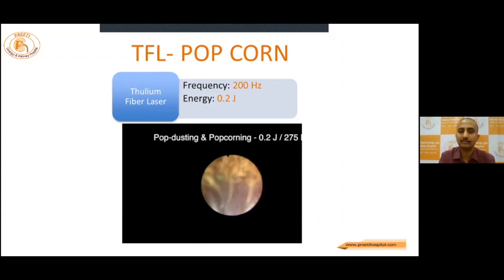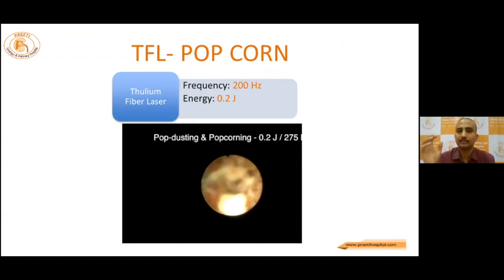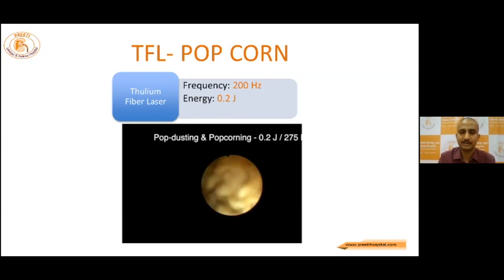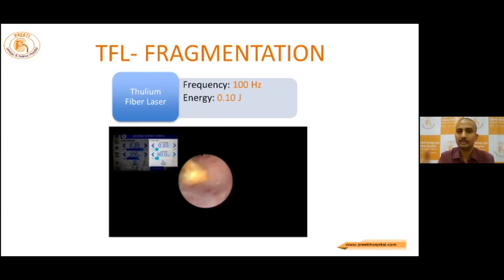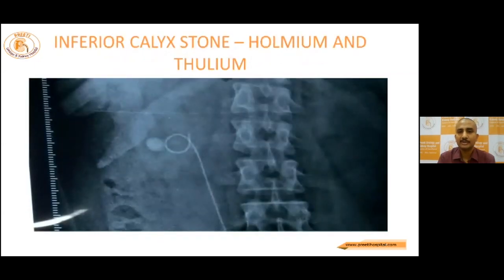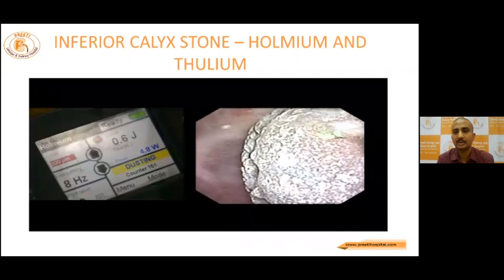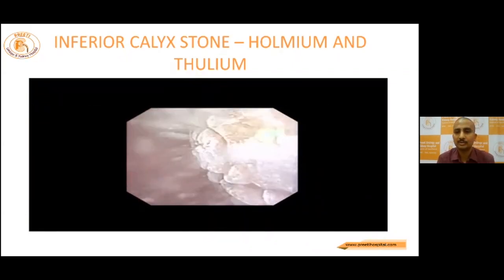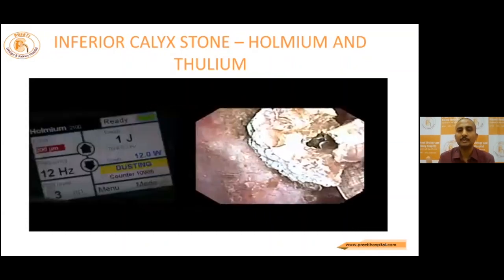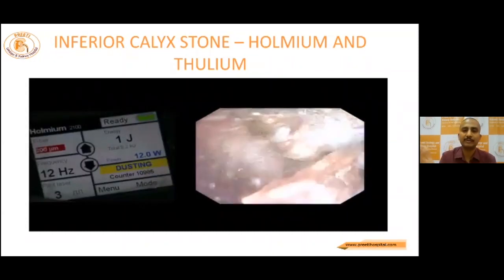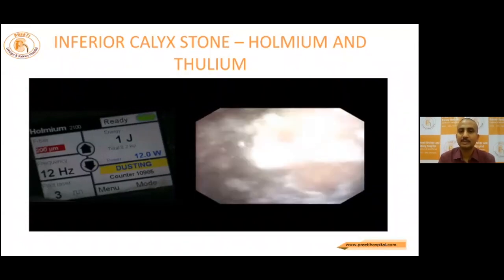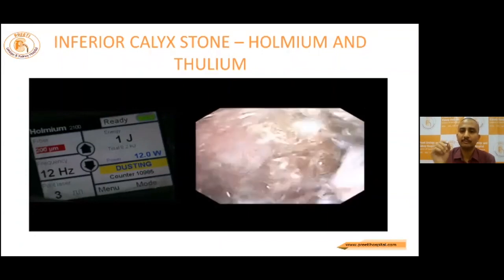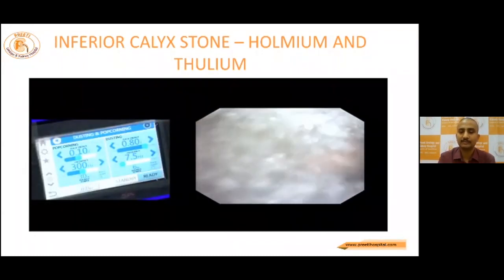For Thulium popcorn, it is one of the best popcorn methods available: whatever the stone burden in the calyx, it will reduce to powder quickly because of the very high frequency achievable. Energy is 0.2 joules and frequency is also high. For fragmentation — just to fragment the stone and extract with a basket — it does a wonderful job. As a case example: a patient with an inferior calyceal stone around 2 cm who declined PCNL required treatment in one setting. We used Holmium laser for initial dusting and reducing fragments as small as possible, then switched to Thulium once fragments were small. Within no time, we achieved very fine fragmentation and complete clearance in one setting.